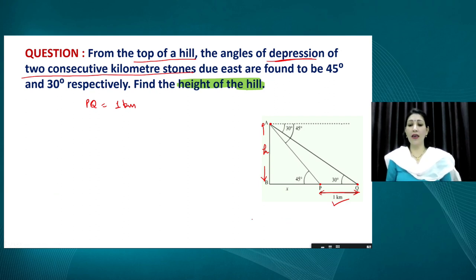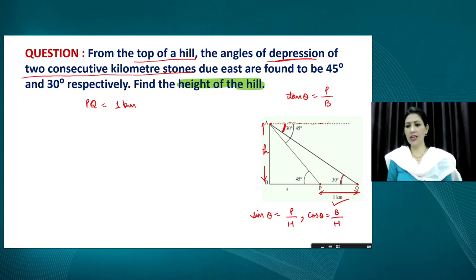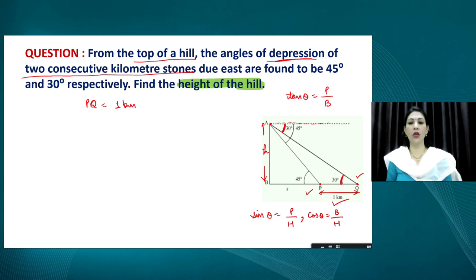We know that sin θ = perpendicular/hypotenuse, cos θ = base/hypotenuse, and tan θ = perpendicular/base. Since angles of depression are given, we use alternative interior angles (from parallel lines) to find angle Q = 30° and angle P = 45°. The steeper the line, the larger the angle — AP is steeper than AQ, confirming angle P = 45° and angle Q = 30°.